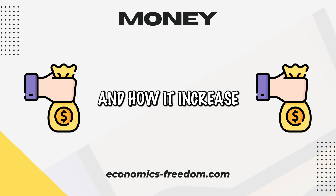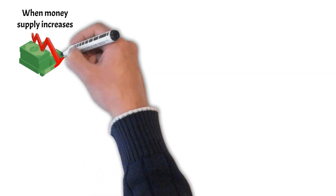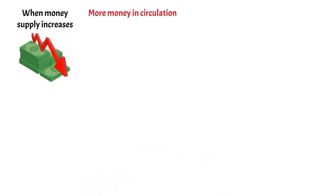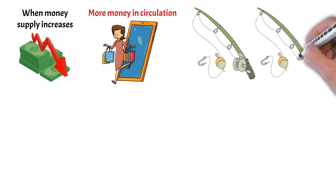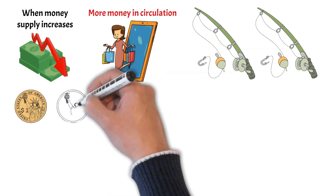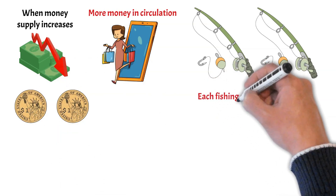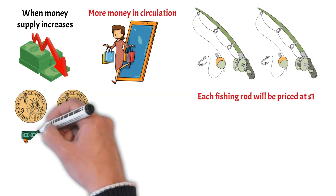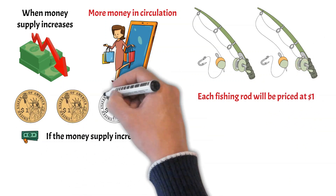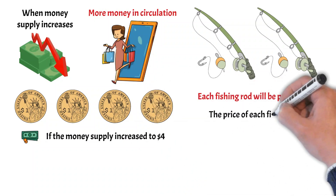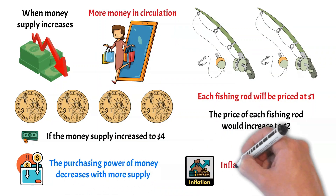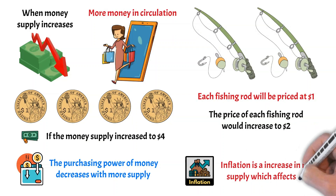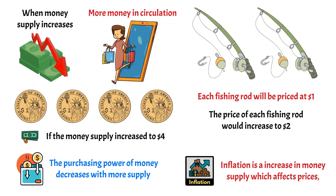Now let's discuss money supply and how an increase affects prices. When money supply increases, the value of each unit of money decreases because there is more money in circulation chasing the same amount of goods and services. For example, if the only two goods available were two fishing rods and the only money available were two $1 coins, each fishing rod would be priced at $1. If the money supply increased to $4 but no more fishing rods were produced, the price of each fishing rod would increase to $2. So the purchasing power of money decreases with more supply — this is inflation. Inflation is an increase in money supply which causes prices to rise.